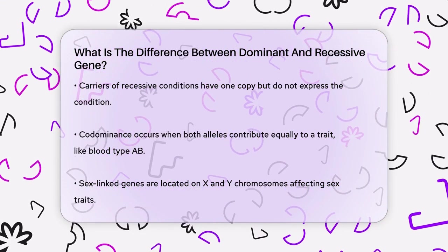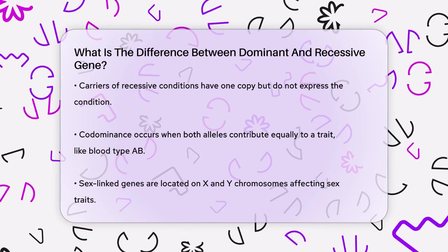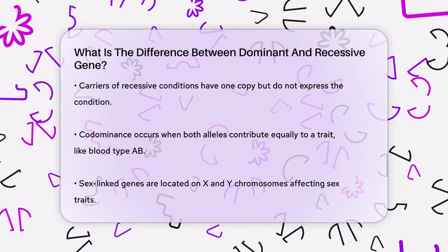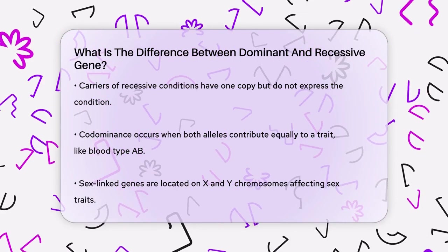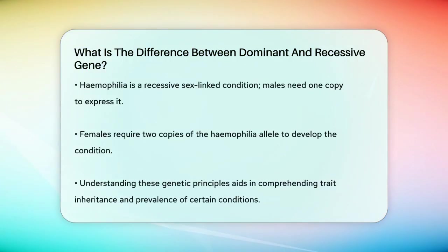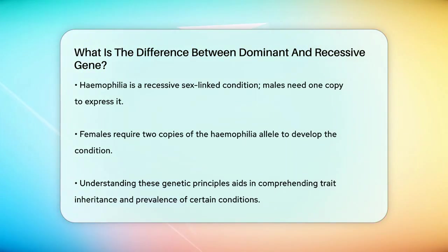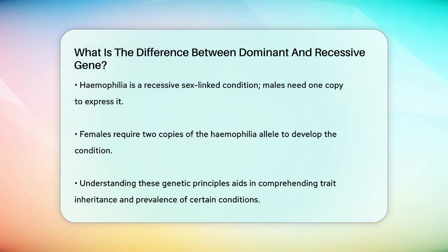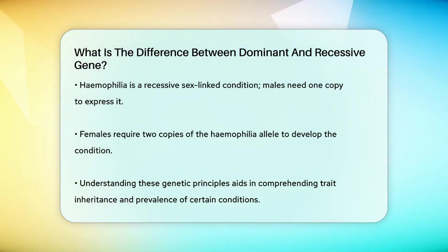Sex-linked genes are another interesting aspect. These genes are found on the X and Y chromosomes, which determine sex traits. For example, hemophilia is a recessive sex-linked condition. If you're a male with an XY genotype, you only need one copy of the hemophilia allele to develop the condition, because you have only one X chromosome. Females with their XX genotype need two copies of the hemophilia allele to develop the condition.